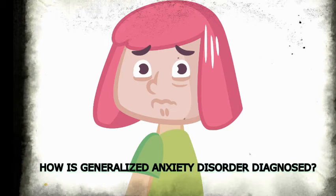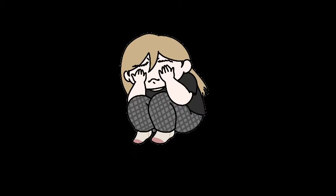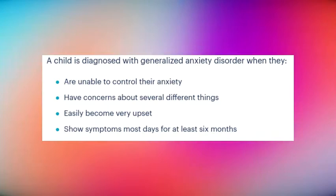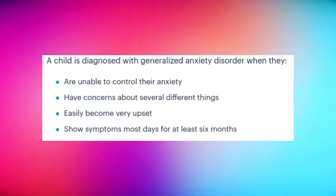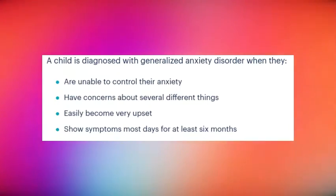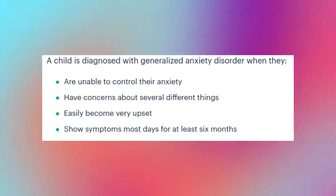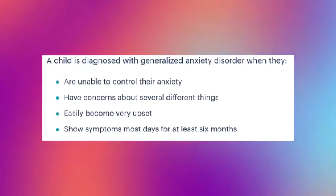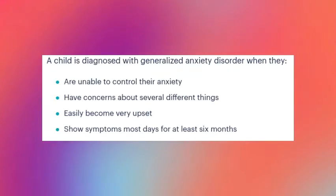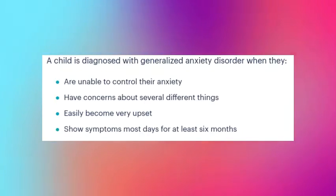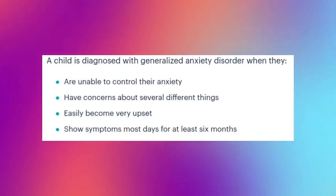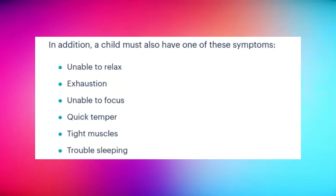How is Generalized Anxiety Disorder diagnosed? Generalized Anxiety Disorder is more than ordinary worry. These children's concerns last longer and aren't caused by a certain event. A child is diagnosed with Generalized Anxiety Disorder when they are unable to control their anxiety, have concerns about several different things, easily become very upset, and show symptoms most days for at least six months. In addition, a child must also have one of these symptoms.